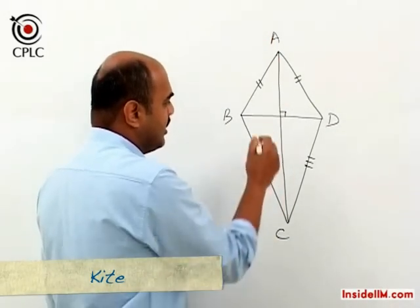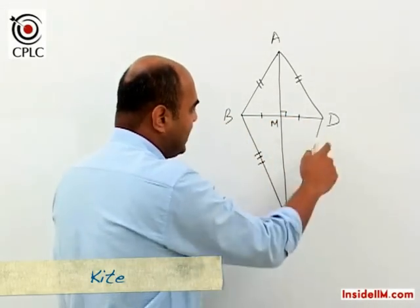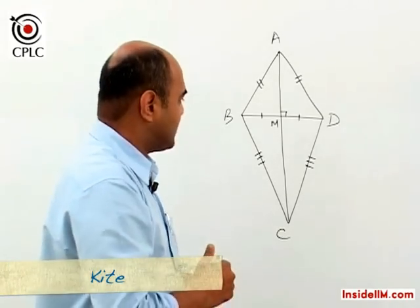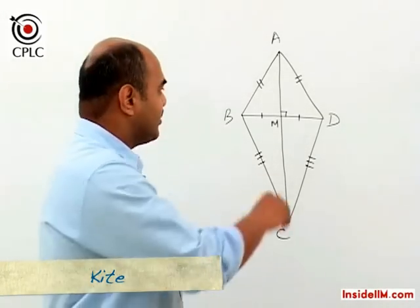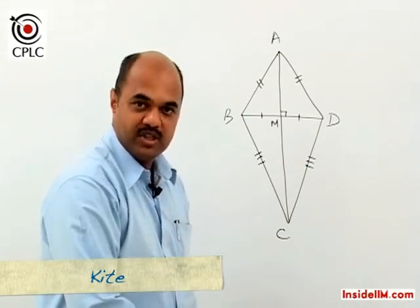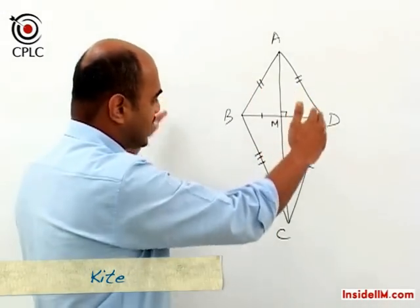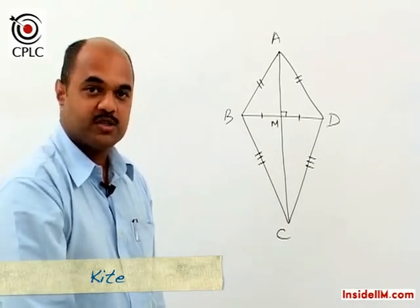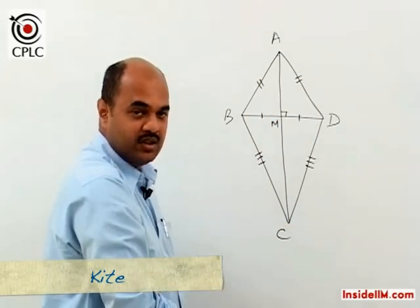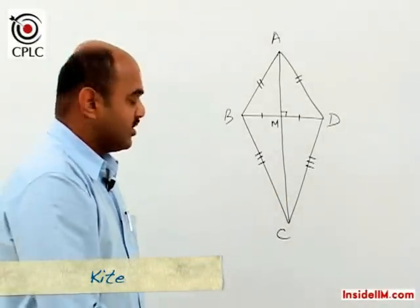In the kite, diagonal AC bisects BD, meaning BM equals MD, but BD does not bisect AC. It is possible that both diagonals bisect each other, and if that happens, the kite gets converted into a rhombus, because the diagonals would then be perpendicular bisectors of each other, making all sides equal. Specifically for a kite: two pairs of adjacent sides are equal, diagonals are perpendicular to each other, and one diagonal bisects the other.